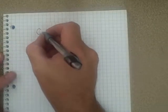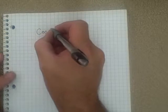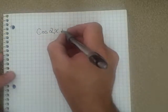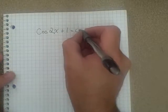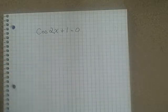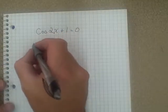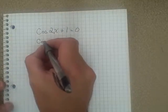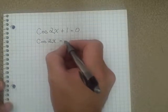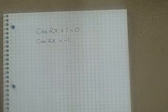Let's say we had cos2x + 1 = 0. So very basic. But you notice it's not cosx + 1 = 0. It has a 2x in there. So we're just going to isolate the cos2x by itself. So cos2x = -1.